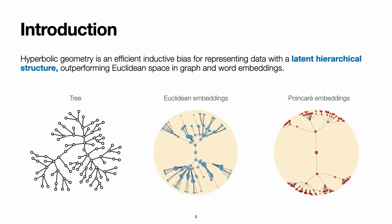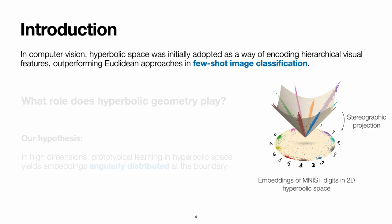As we can see here in these two images comparing Euclidean embeddings and Poincaré, which is a specific type of hyperbolic embeddings of the same tree. In computer vision, hyperbolic geometry was introduced under the hypothesis that it would help capture hierarchical visual features and thus help improve generalization and few-shot recognition abilities.